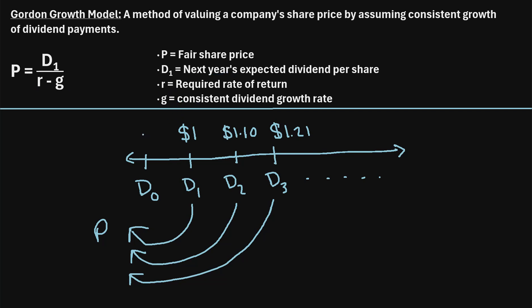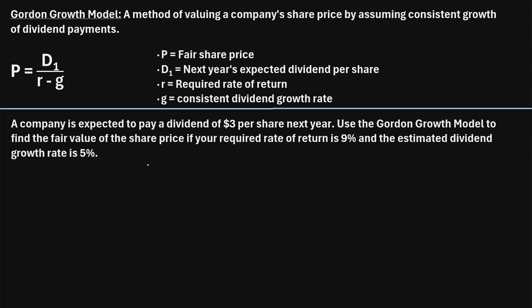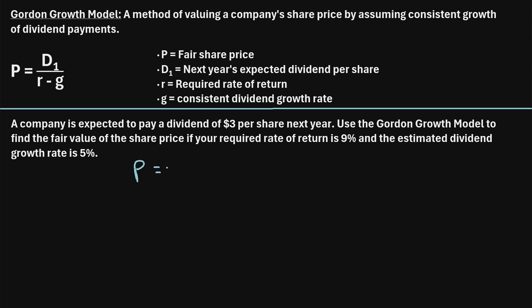Let's take a look at an example of how to actually use this model. A company is expected to pay a dividend of $3 per share next year. Use the Gordon Growth Model to find the fair value of the share price if your required rate of return is 9% and the estimated dividend growth rate is 5%. To calculate the fair value of the share price, we're just going to use this formula. So P, the fair share price, is equal to D sub 1 — the dividend we expect to receive next year — which we're told is $3.